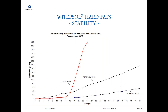You can produce Rancimat curves, and here I will show you a comparison of cocoa butter — which is still used for production of suppositories and ovules — compared to Witebsol W35 and H15. As you can easily see, cocoa butter decomposes quite quickly, showing a very sharp uprising of the curve. The Witebsol curves are significantly more stable and flatter compared to cocoa butter.